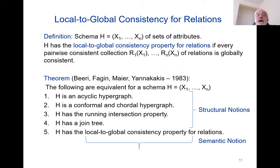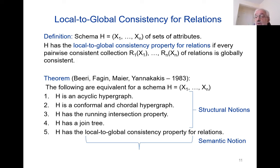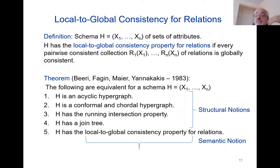So let's go back to the theorem: the following are equivalent for a schema H — it's an acyclic hypergraph; conformal and chordal; has the running intersection property; has a join tree; and has the local-to-global consistency property for relations. Let's compare these notions. The first four are combinatorial and structural — they only talk about the hypergraph and don't mention semantics or relations. The last property is a semantic notion. So in some sense, this is a soundness and completeness theorem: the structural notions are equivalent to a semantic notion.